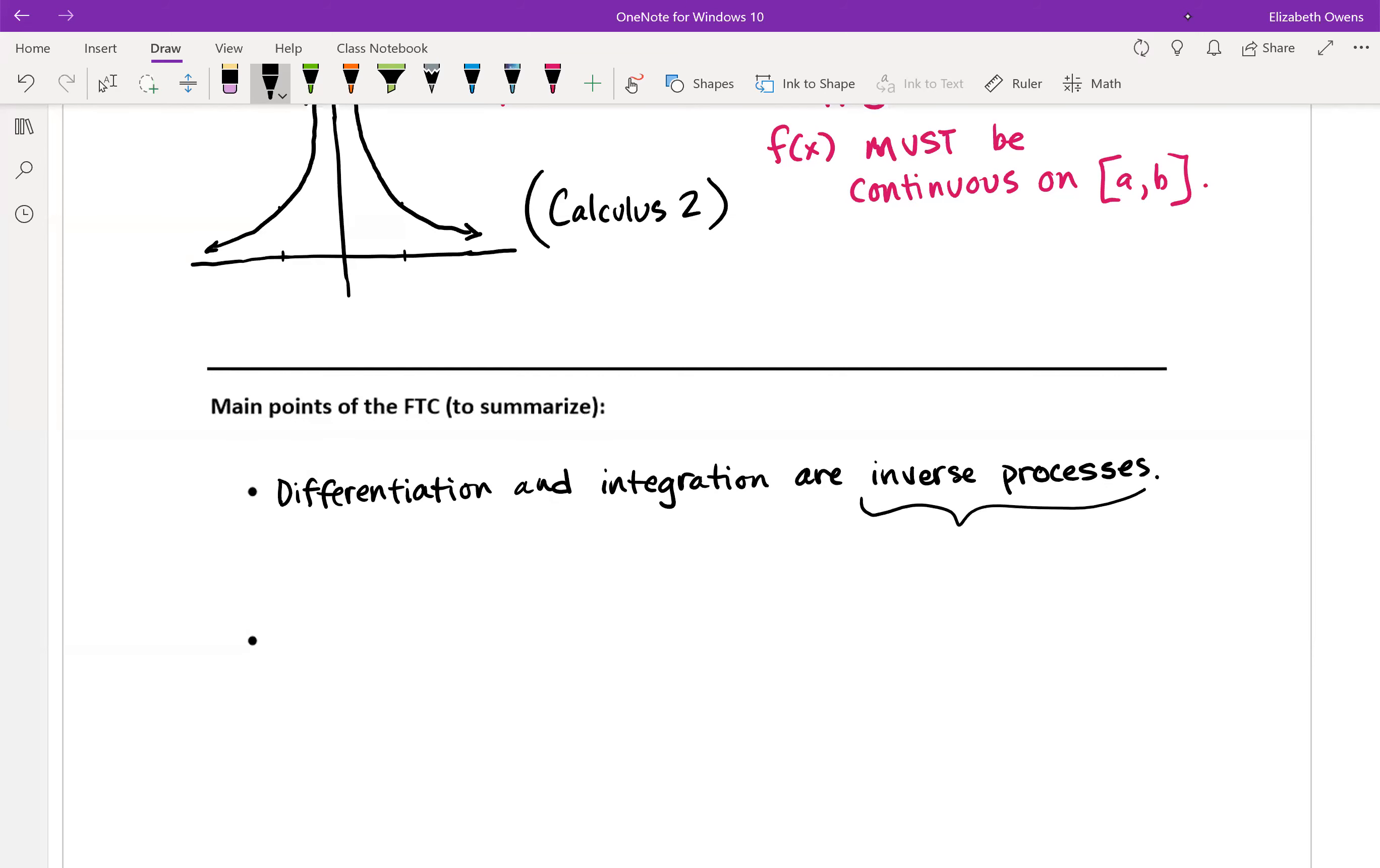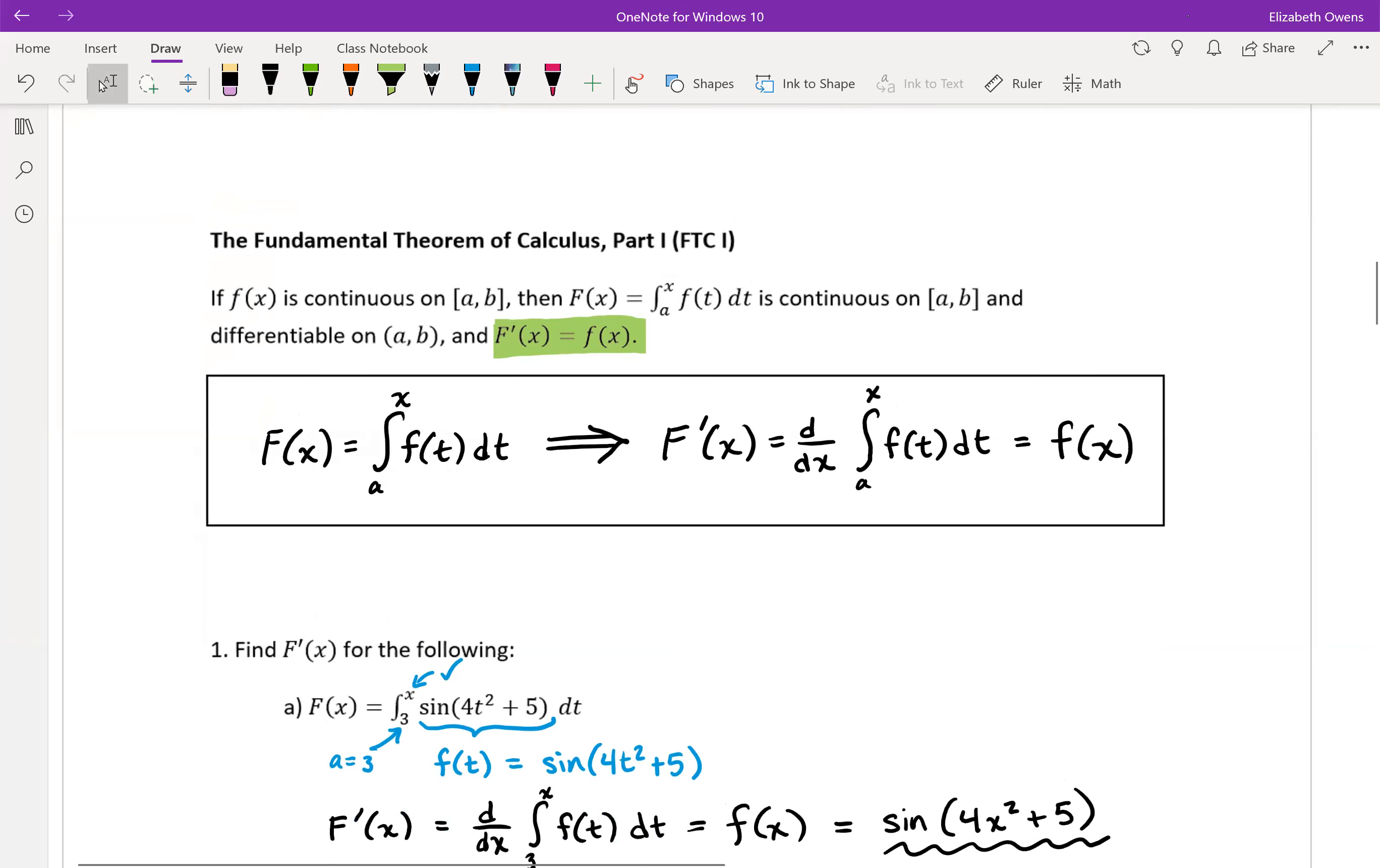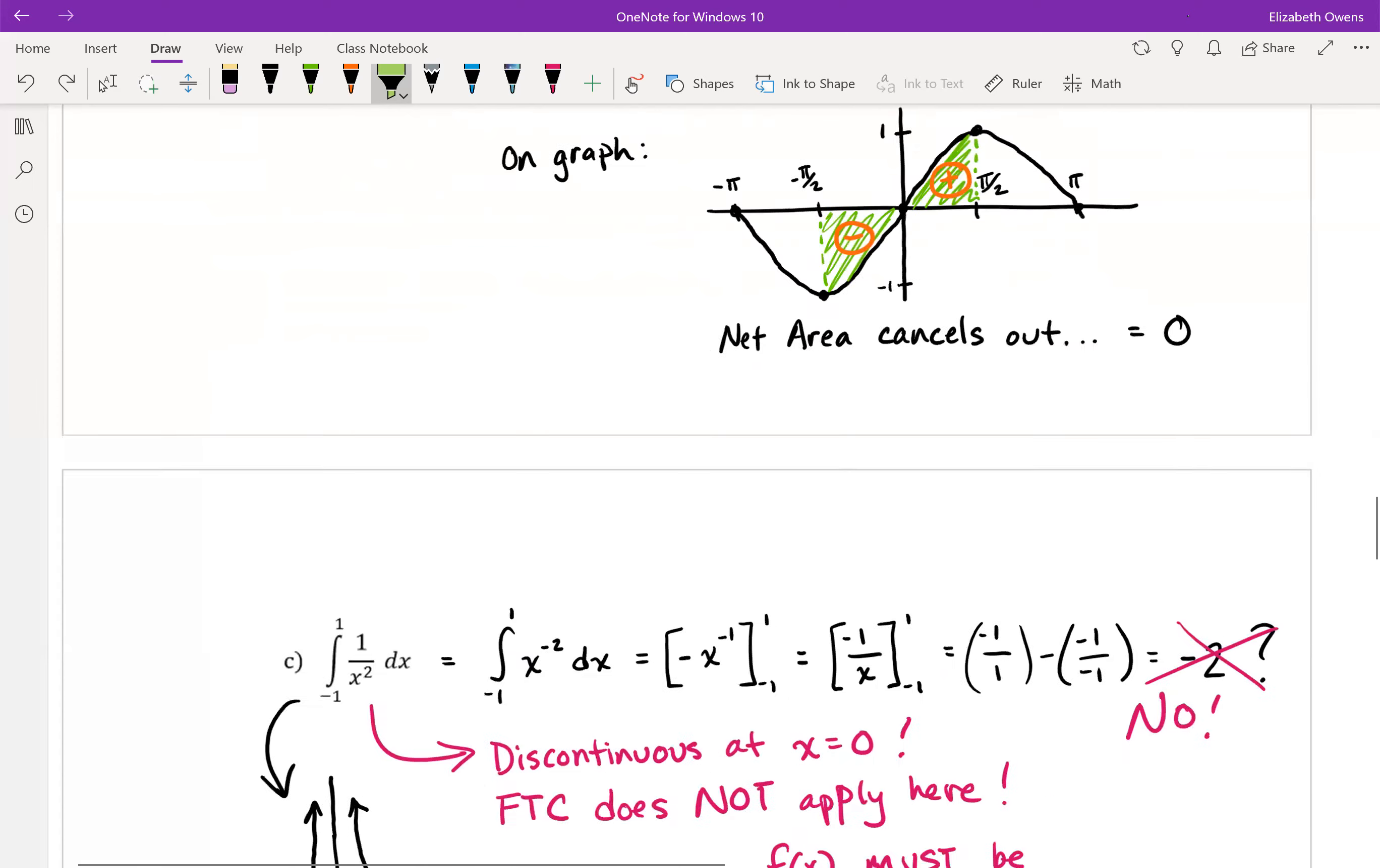You can think of these as things that undo each other, like adding and subtracting, multiplying and dividing, exponentials and logarithms in some cases. Derivatives and integrals undo each other. And we were seeing that in FTC part one, back up here, because we were taking the derivative of an integral, and we were just ending up with basically the integrand function spit back to us. So derivatives and integrals will undo each other.